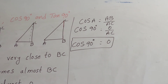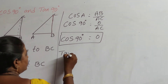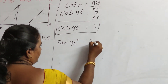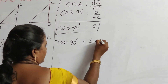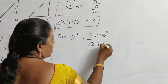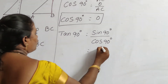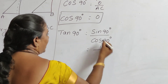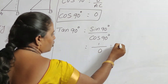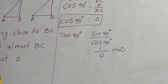Then tan 90 degrees equals sin 90 degrees by cos 90 degrees. Sin 90 value is 1 and cos 90 is 0, so we get 1 by 0. As already discussed, 1 by 0 means its value is infinity. So tan 90 degrees equals infinity.